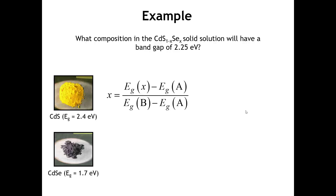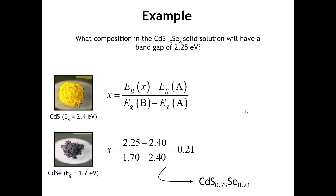To get the value of x, all we really have to do is plug in the band gaps for the end members. Let's call A cadmium sulfide with a band gap of 2.4, and B cadmium selenide with a band gap of 1.7. The band gap of the intermediate composition we want is 2.25. When you plug that all into the formula, you get 0.21. So this is going to be the selenium content in our solid solution — a crystal with composition cadmium sulfur₀.₇₉ selenium₀.₂₁ should have a band gap very close to 2.25, provided Vegard's Law is followed.